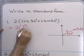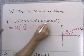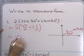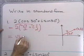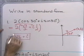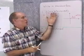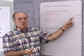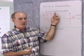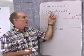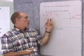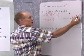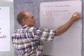cos30° is √3/2, plus i times sin30° which is 1/2. Multiplying through by 2, I get √3 plus i. So √3 + i is the complex number 2(cos30° + i·sin30°) in algebraic or standard form. The graph is a vector from the origin to the point (√3, 1), whether viewed in trigonometric or standard form.